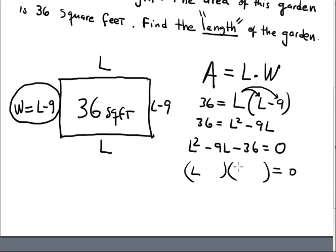L squared minus 9L minus 36 equals 0. The factorization in this case is 12 and 3, because 12 times 3 is 36 and 12 minus 3 is 9. Different sign, this is negative and this is positive. One solution is L equals 12. Another solution is L equals negative 3. But you discard this solution, only positive solution.